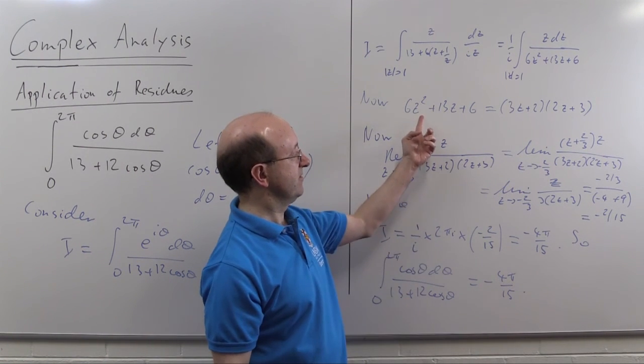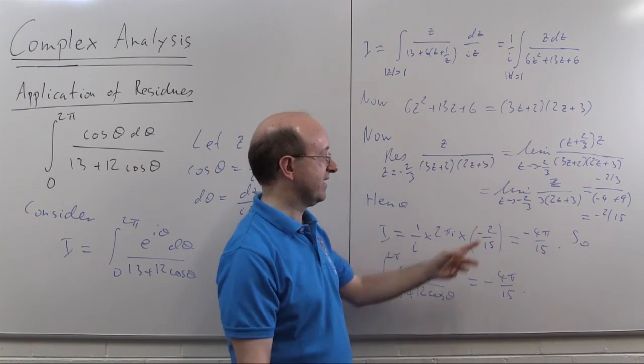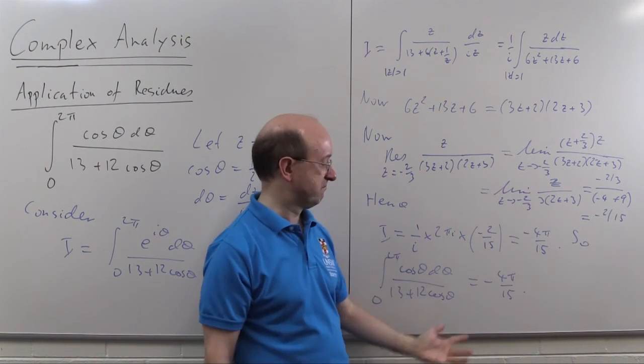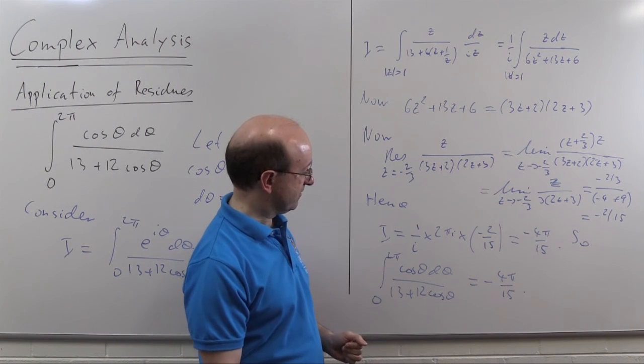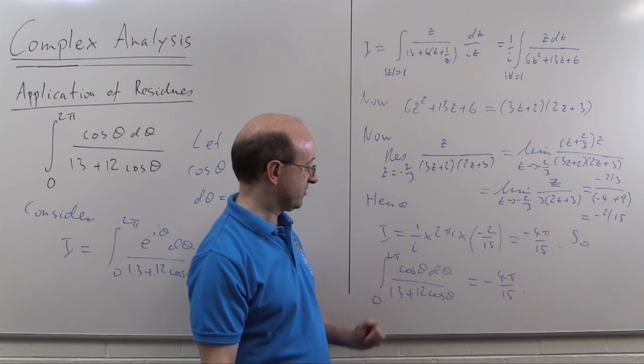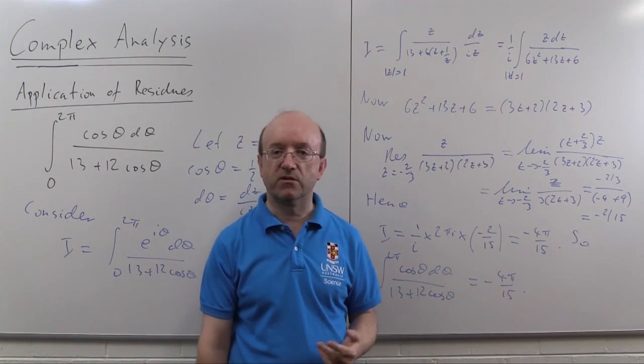The only real calculation I had to do, well 2 really, I had to factorize a quadratic and I had to take a very simple limit, and that's the answer. What was my bonus? My bonus was the integral of sin theta d theta over 13 plus 12 cos theta, well that's 0.